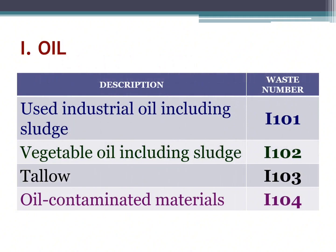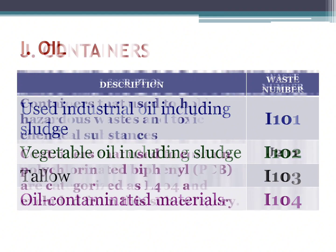The next category is oil. Used industrial oil including sludge, waste number I101. Vegetable oil including sludge, waste number I102. Tallow, waste number I103. Oil contaminated materials, waste number I104.